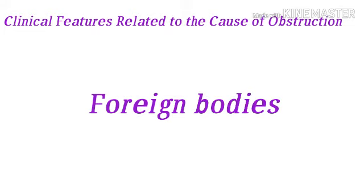Inhaled foreign bodies usually get lodged in the right main, intermediate, or lower lobe bronchus. Common foreign bodies inhaled are nuts, peas, beans, small pieces of toys, articles of food, and fragments of tooth during dental extraction under general anesthesia. Initial presentation is either as obstructive emphysema or lobar collapse.